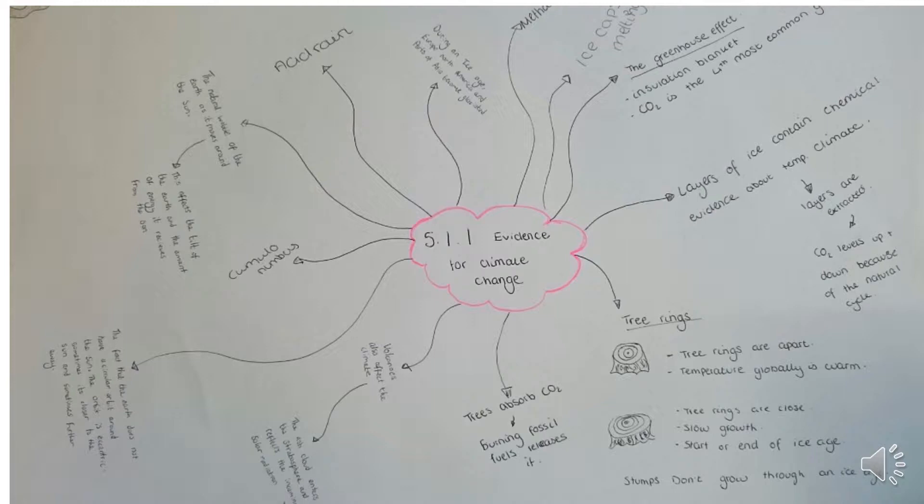There are also other cycles of change as a result of something called the Milankovitch cycles, and we've also had some very small interglacial periods — for example, the medieval period, which was probably about 400,000 years ago.